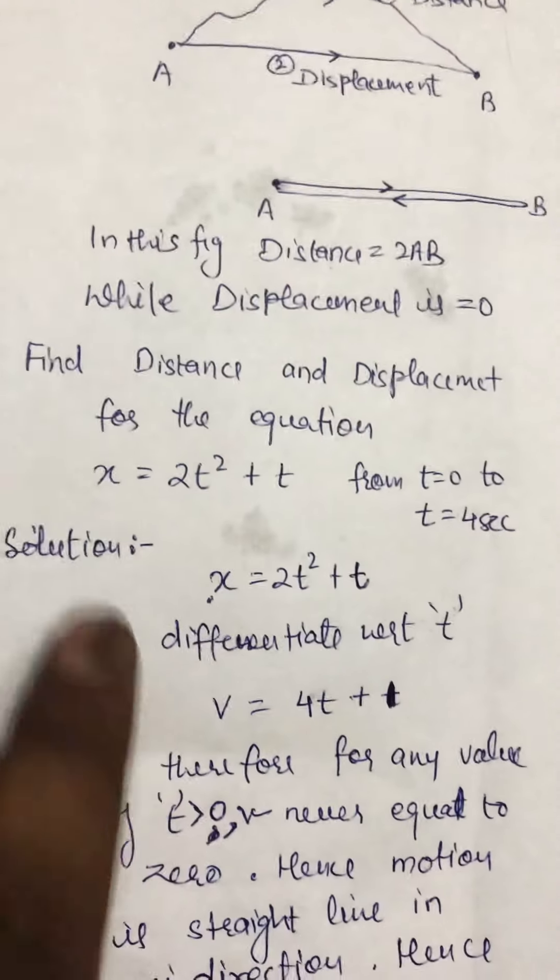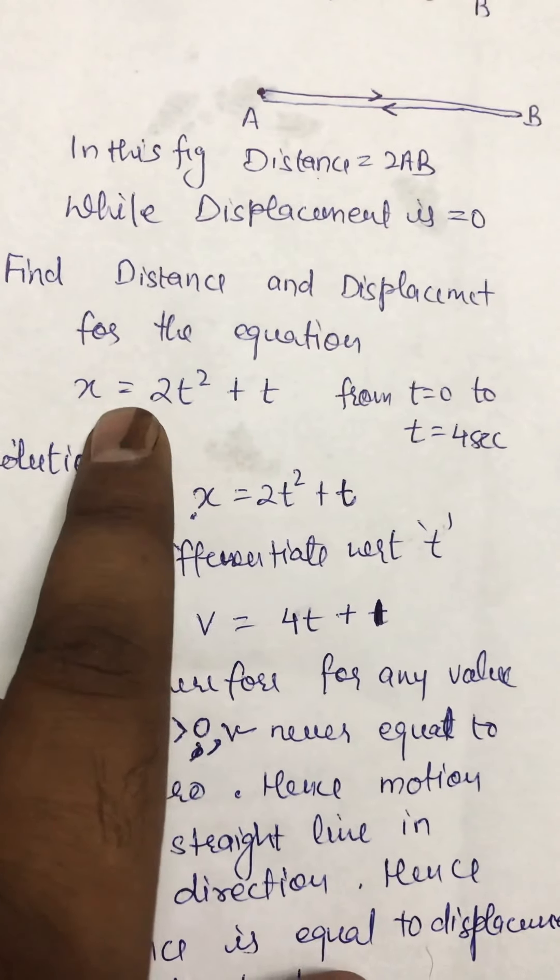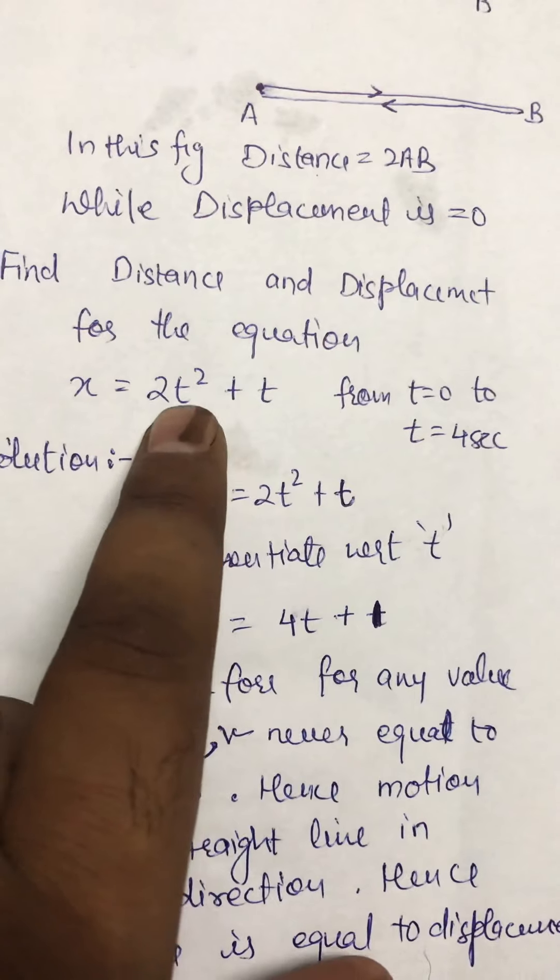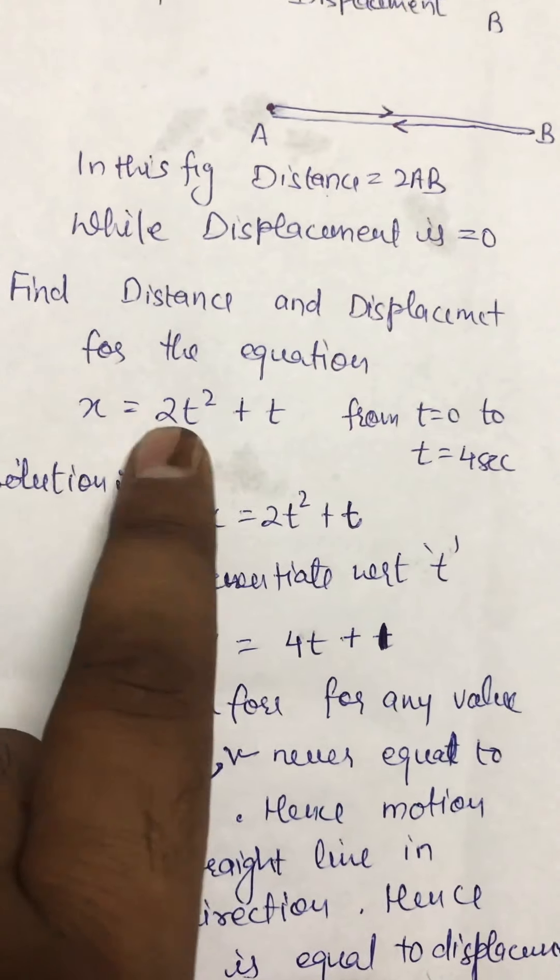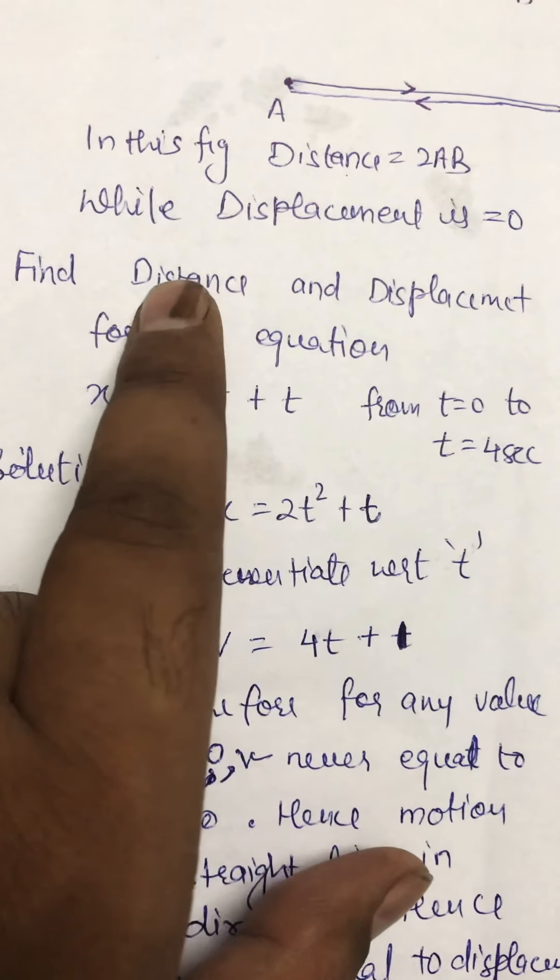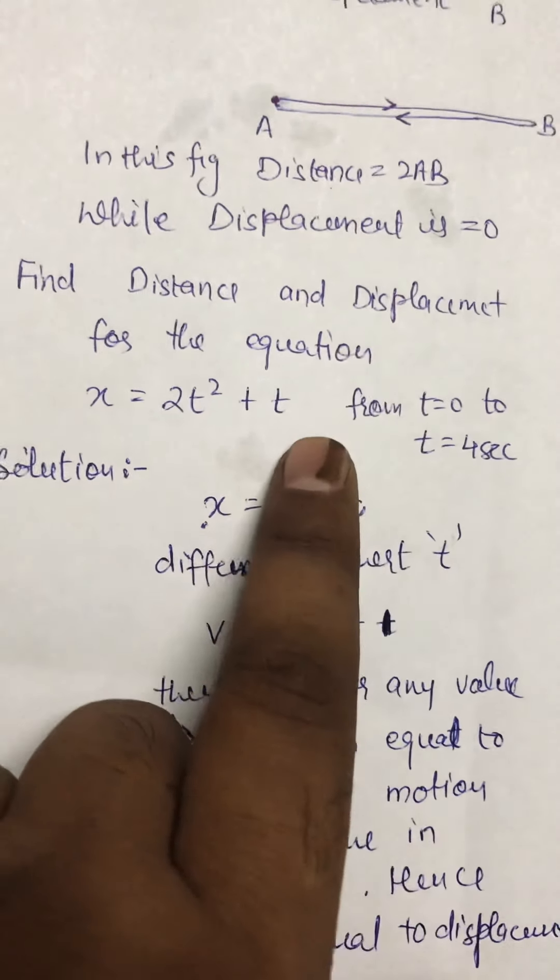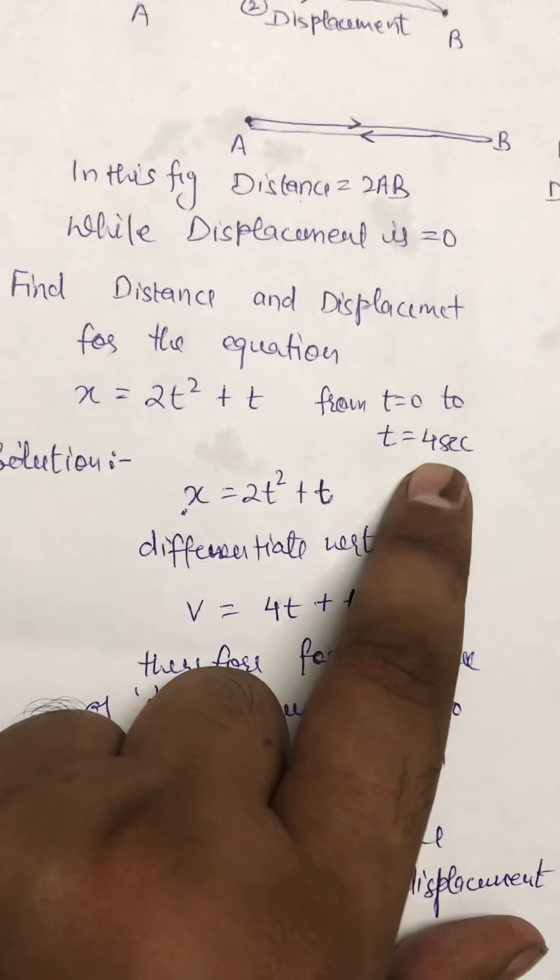Now we show some numerical examples for distance and displacement. Let me suppose the equation of displacement for any time t is x = 2t² + t. We have to find distance and displacement for this equation from t = 0 to t = 4 seconds.